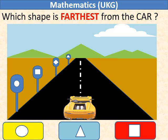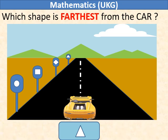Which shape is farthest from the car? Circle is very close to the car, but triangle is farthest from the car.